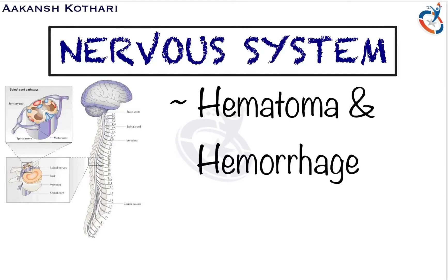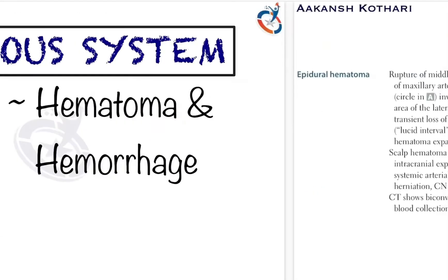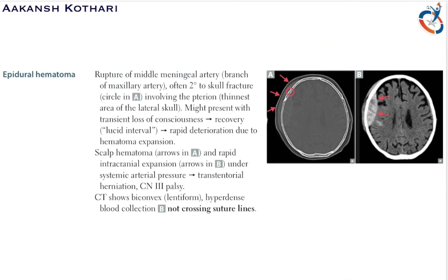Welcome to the module on the nervous system. We will talk about a very important and highly tested topic: hematomas and hemorrhages. Starting with epidural hematoma, it is primarily caused by rupture of the middle meningeal artery, which is a branch of the maxillary artery.